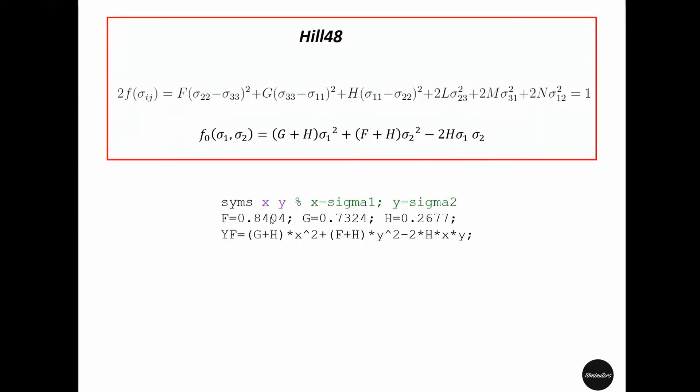So we use these constant parameters. Next, similar to von Mises, we will use this fcontour function to plot the yield surface. One difference is how we set the level list for this yield surface.